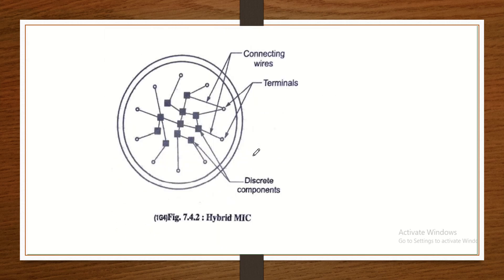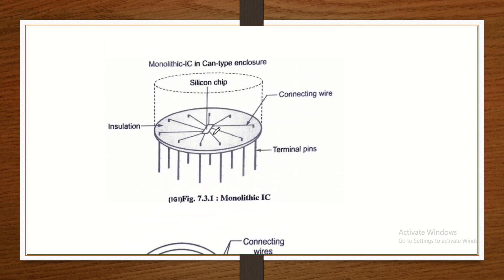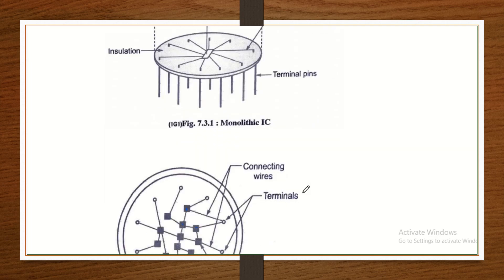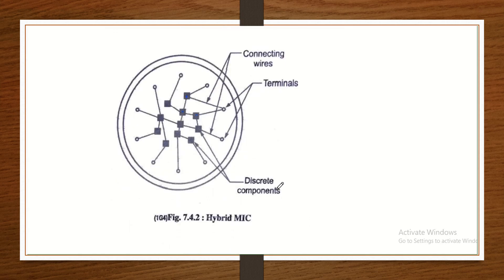The second type of IC is hybrid. Hybrid means it is a mixture — more than one IC. If we look at it, there are more components available, connected through connecting wires and terminals. Here there are discrete components. In terms of fabrication, monolithic is simpler; hybrid is a little more difficult. If we talk about cost, the cost of monolithic will also be more.